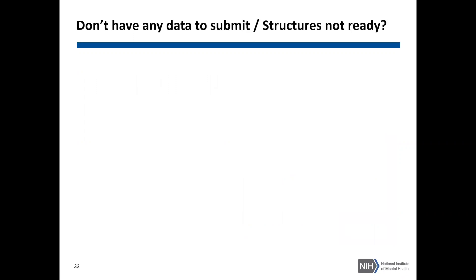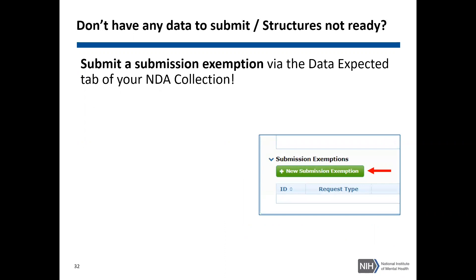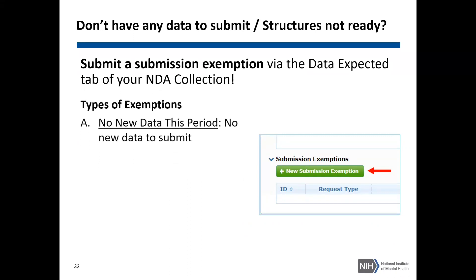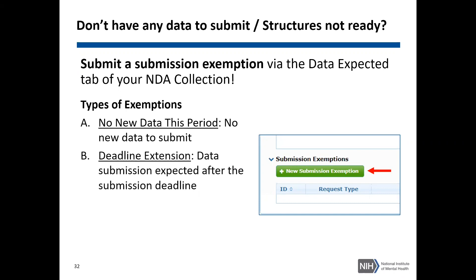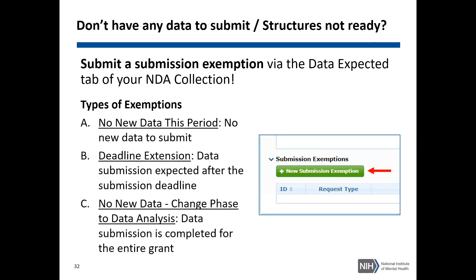In the event during a submission cycle where you either don't have any data to submit or the structures aren't ready in your data expected list, you can submit a submission exemption, which notifies NDA that you will not be submitting any data for that submission cycle. There are three types of exemptions: Type A — no new data this period, meaning you don't have any new data to submit; Type B — deadline extension, typically meaning you have data to submit but it will likely be ready after the submission deadline; and lastly, no new data, change phase to data analysis, which is submitted when you've completed data submission for the entire grant and do not expect to submit any more data to your NDA collection.